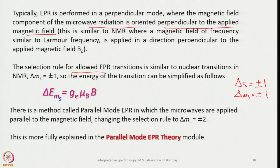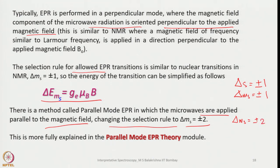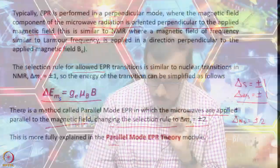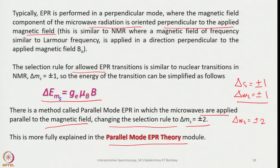There is also a parallel mode EPR, where microwave radiation is applied parallel to the magnetic field, changing the selection rule to ΔmS = ±2. This is a special case; in the standard perpendicular mode ΔmS = ±1, analogous to NMR. The details of parallel mode EPR theory will not be covered here.